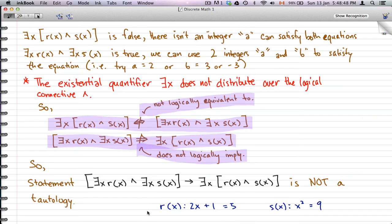Moving on to the next page, you can see that I copied our open statements here. What I want to get at in this example is that if we try to find the validity of this statement that there exists some x where R(x) and S(x) is true, well this statement is actually false.